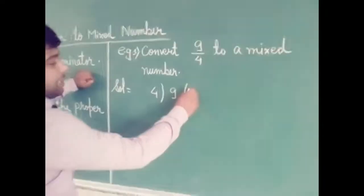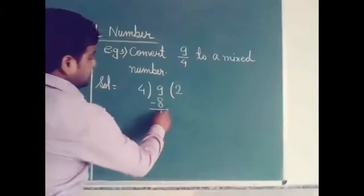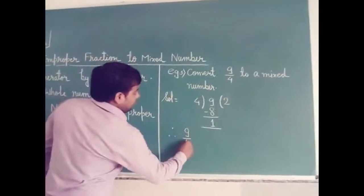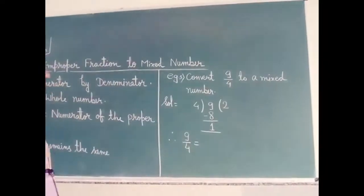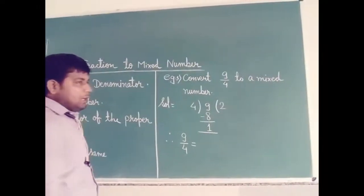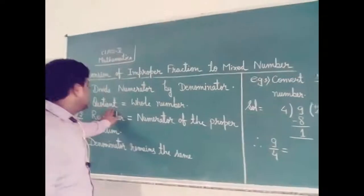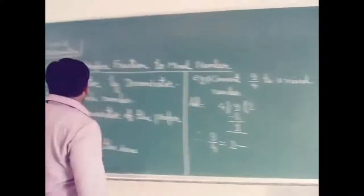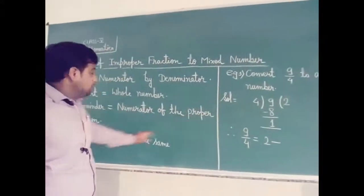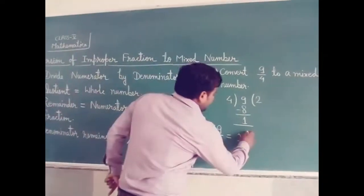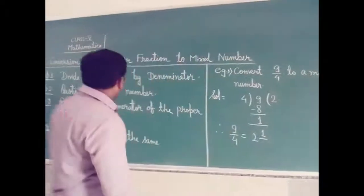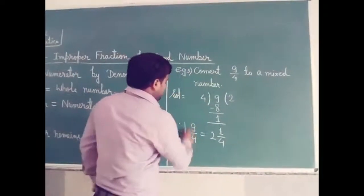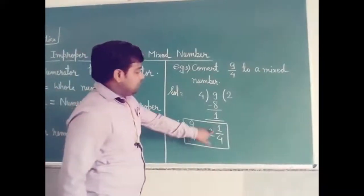We know 2 times 4 gives 8 and the remainder is 1. Therefore, 9 by 4 equals — we know that a mixed number is a combined form of a whole number and a proper fraction. Quotient is the whole number, so quotient is 2. Remainder is the numerator of the proper fraction, so remainder 1 is the numerator. Denominator remains the same, denominator is 4. So we can read it as 2 whole 1 by 4.